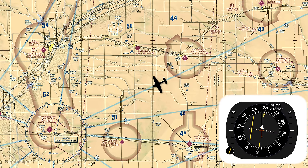Since we're not on that course, the needle will deviate off center. When we twist back to the inbound course we're actually flying — the 230 — the needle will center up again. Notice the course selector has a green head with an arrow that points to the selected course, and a green tail with no arrow that is the reciprocal of the selected course.